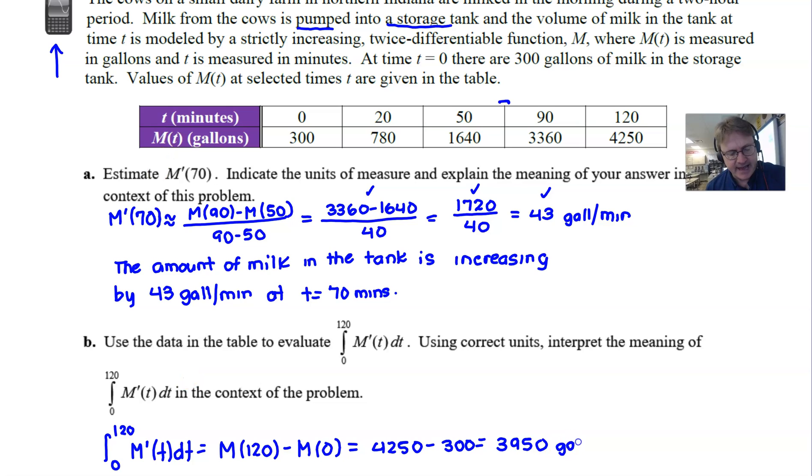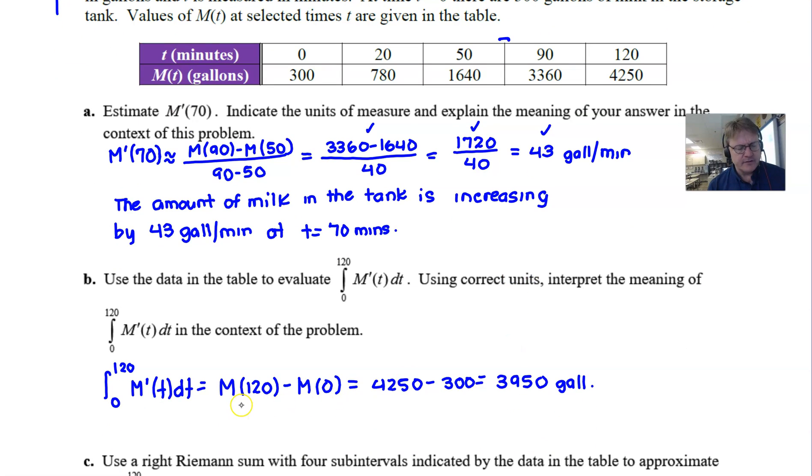And once again we want units and we want an interpretation. Well, by the time you realize that this is M, hopefully you realize that this is gallons, right, gallons of milk. Now what is the interpretation? Well, over the span of time this is the accumulated amount of this object, this item that we have acquired. So we could say that 3950 gallons of milk...